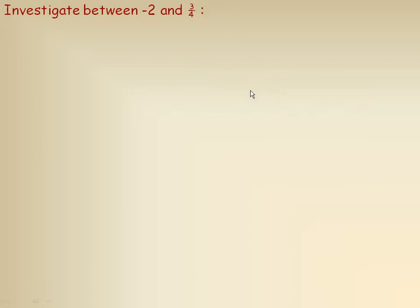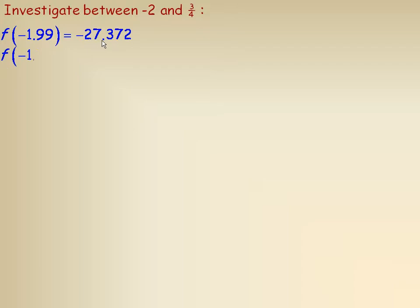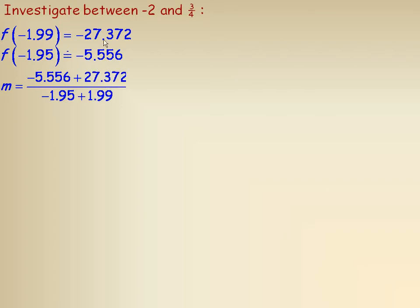Now for the interval between −2 and 3/4, I take x = −1.99 (just to the right of −2) and get a y value, then x = −1.95 for another y value. Notice the y changes considerably even though x barely changed. Finding the slope gives a very large positive value of about 545.4 — certainly increasing there and very steeply.